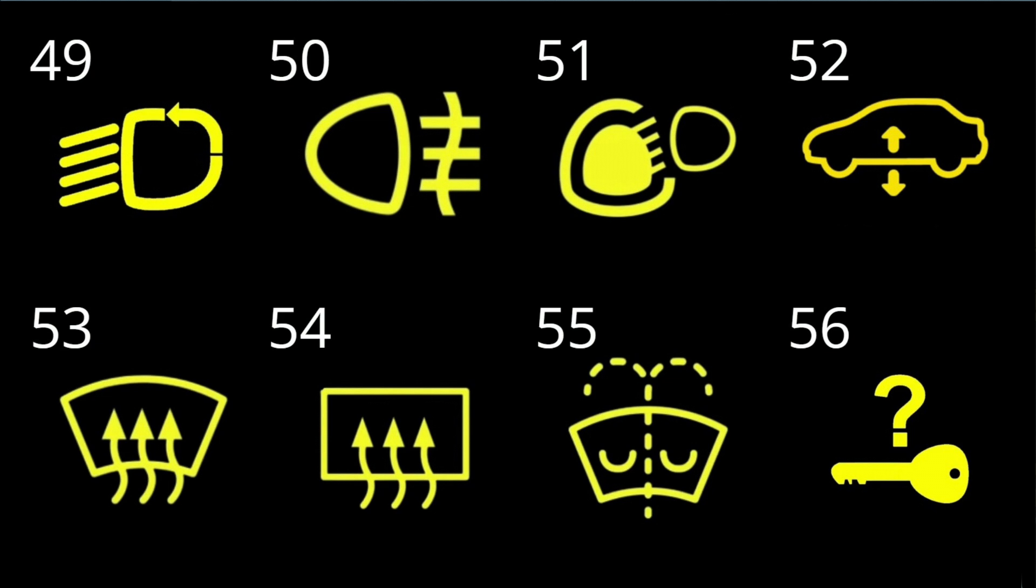56. Key fob not detected. Vehicles equipped with keyless ignition won't start without the correct key fob. Even if the key fob's battery goes completely flat, you can start the vehicle by placing the key fob close to the area designated in the owner's manual, usually close to the right of the engine start/stop button. You can open the driver's door by using the key fob's physical key.